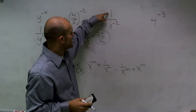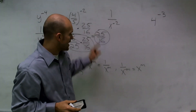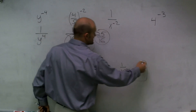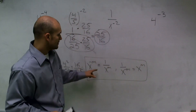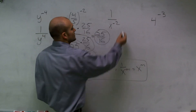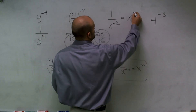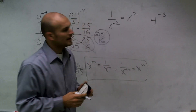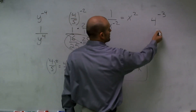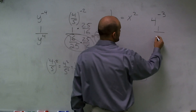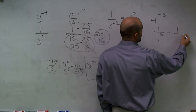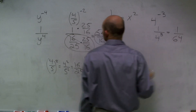For 1 over x to the negative second power: using the rule of exponents, whenever you have a negative exponent in the denominator, you can move it to the numerator as a positive exponent. So the answer is x squared. And 4 to the negative third power rewrites as 1 over 4 cubed, which simplifies to 1 over 64.